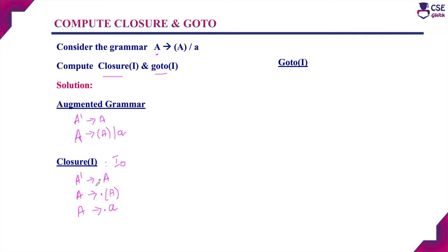First we need to perform goto operation for the first production. After the dot, non-terminal A is there, so we have to perform goto(I0, A). Goto of I0 comma A is: A' derives A dot. That is, we are performing a move on the dot — after this A, the dot will be placed. We check if after the dot any other A production is there; these two are different, not with the A variable. So goto(I0, A) is over.